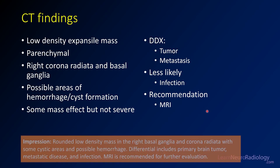When you're dictating your CT, you want to describe what you've seen: a low-density mass in the right basal ganglia and corona radiata with cystic areas and possible hemorrhage. Give them a differential — your top two or three: primary brain tumor, metastatic disease, and infection. And you want to recommend an MRI because that's going to be the next key step.